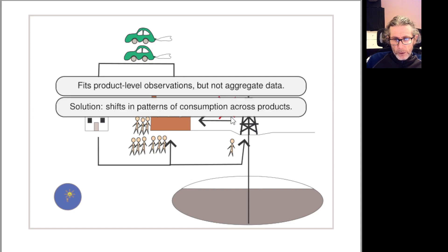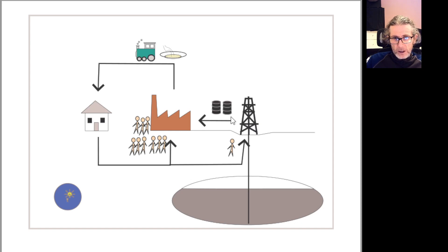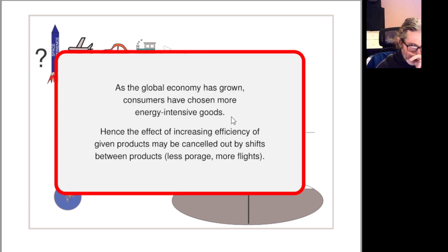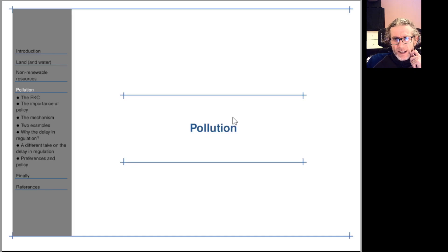So how do we fit them both? We have to have shifts in patterns of consumption across products. We have porridge, then porridge and train journeys, then porridge, train journeys, and car journeys, then porridge, train journeys, car journeys, flights, and space travel. As the global economy has grown, consumers have chosen more energy intensive goods. That's a simpler way of describing the same process compared to the previous video.